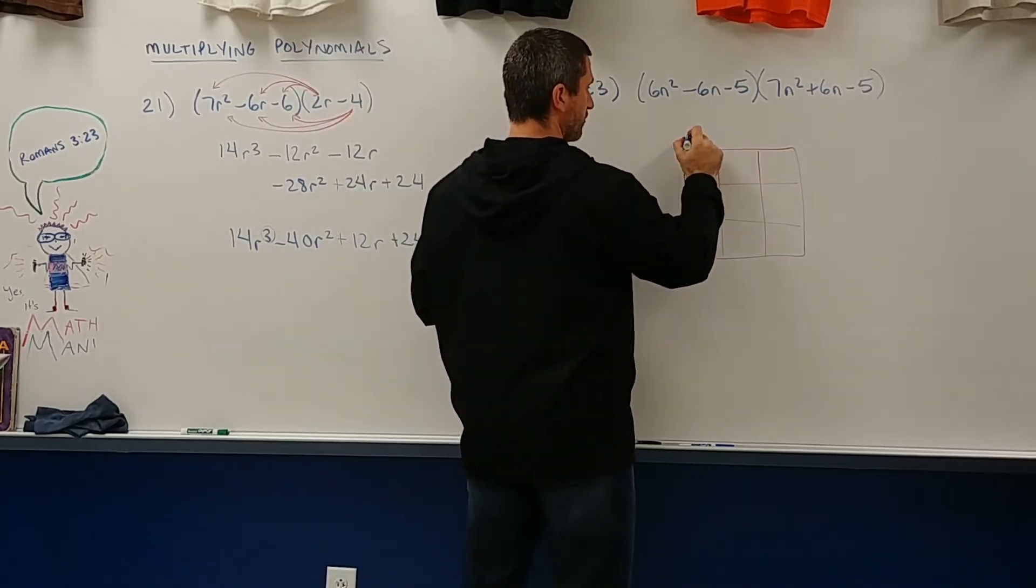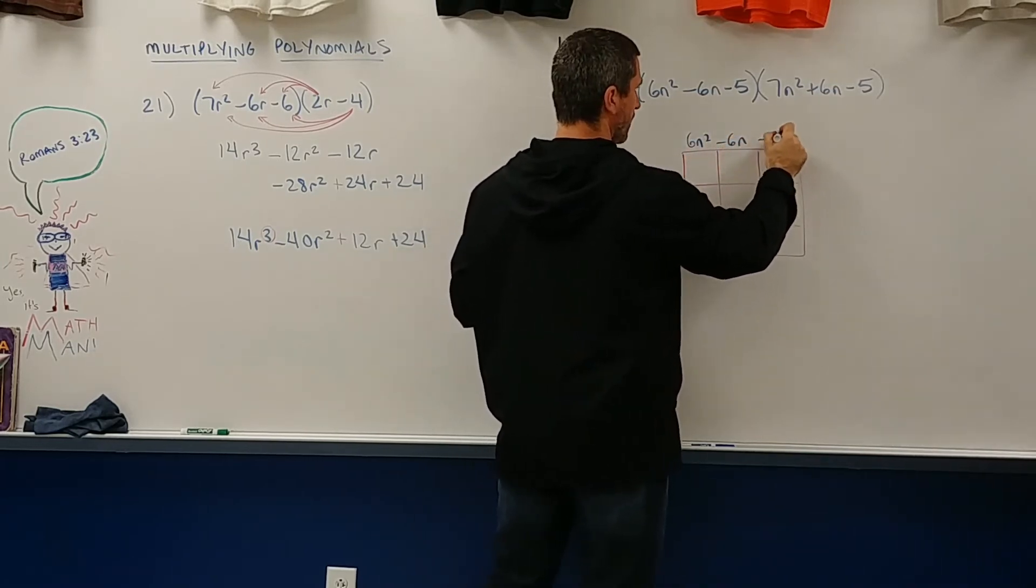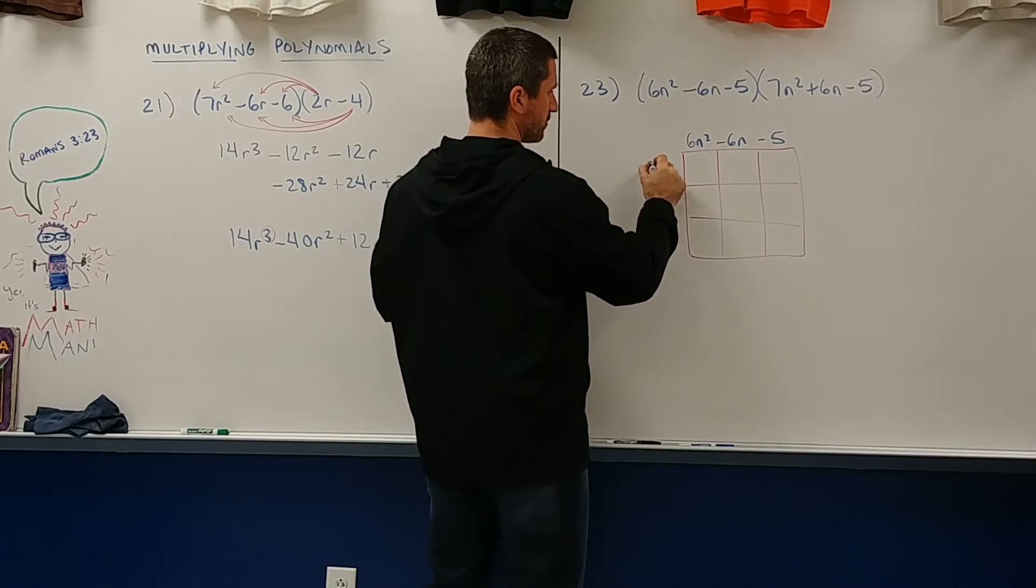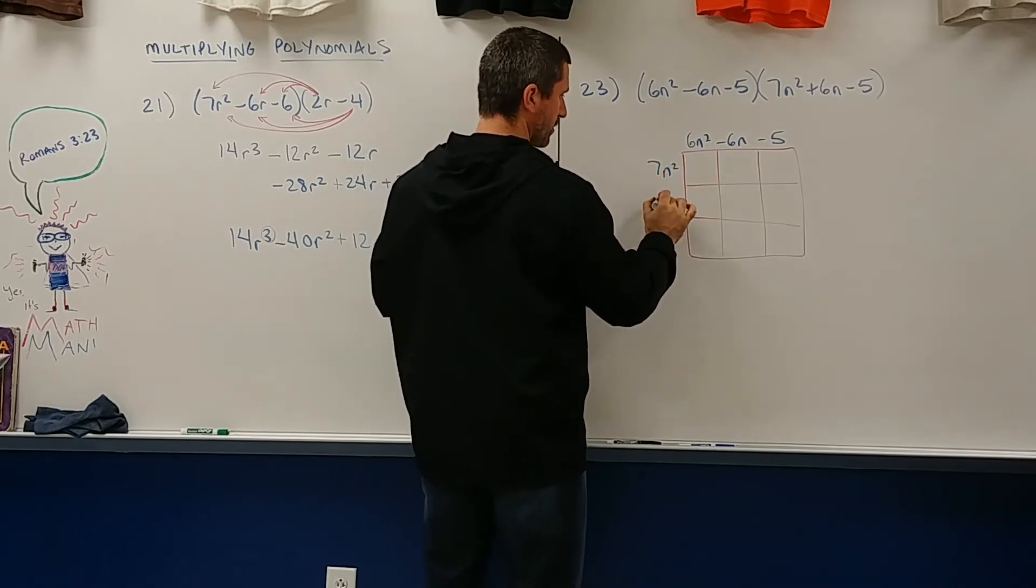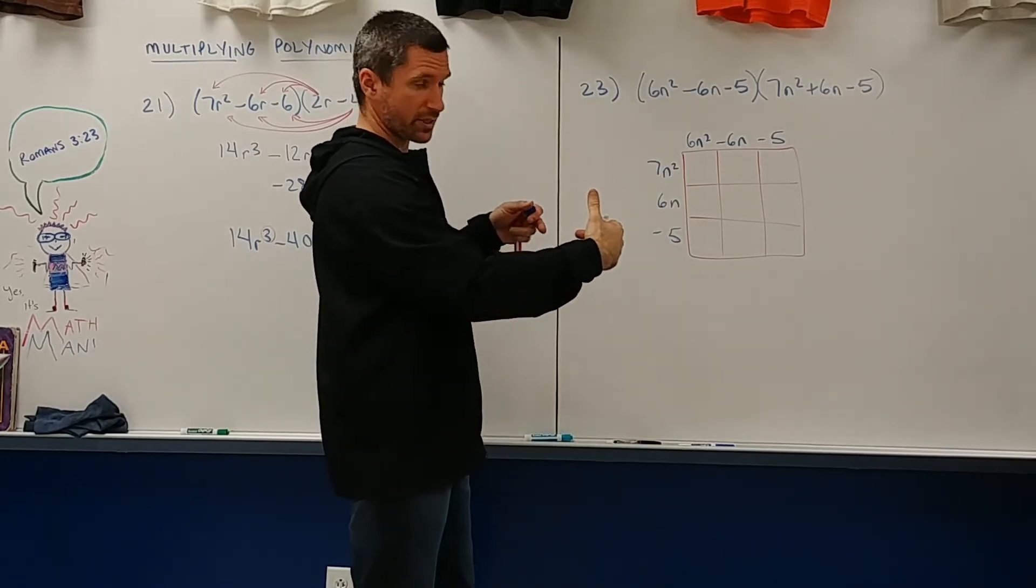So you could write the first trinomial on top: 7n squared minus 6n minus 5. And you could write the second one down the side: 6n squared, 6n, and negative 5. And now you just multiply.